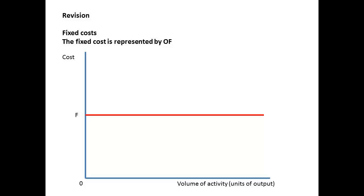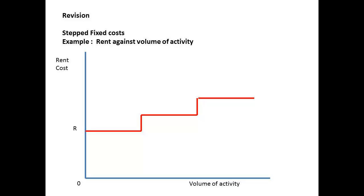Let us recap and put some of these ideas together. We will assume the business has unit fixed costs, and these are going to be plotted as a graph. We start with a horizontal line. The fixed costs are represented by OF.